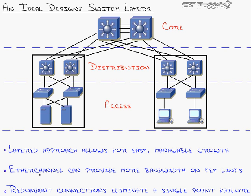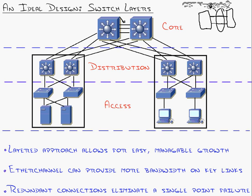Down here is a new term: EtherChannel, which can provide more bandwidth on key links. EtherChannel lets you take between two and eight ports and bundle them together into a single logical pipe. So if you have two switches connected by two 100-megabit-per-second ports, EtherChannel ties them together to get 200 Mbps of throughput. You can bundle a bunch of links and channel them all to get super high bandwidth between your switches.